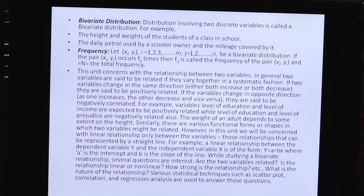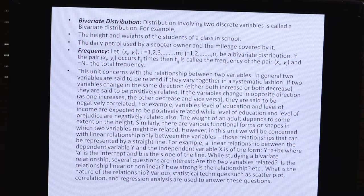Bivariate Distribution क्या है? Distribution involving two discrete variables is called Bivariate Distribution. वह Distribution जिसमें की दो discrete variables involved होते हैं, उस Distribution को Bivariate Distribution कहते हैं। For example, Height and Weight of the Students in a Class, या Daily Petrol used by a Scooter Owner and the mileage covered by it। इसमें एक variable Height और दूसरा variable Weight होता है।